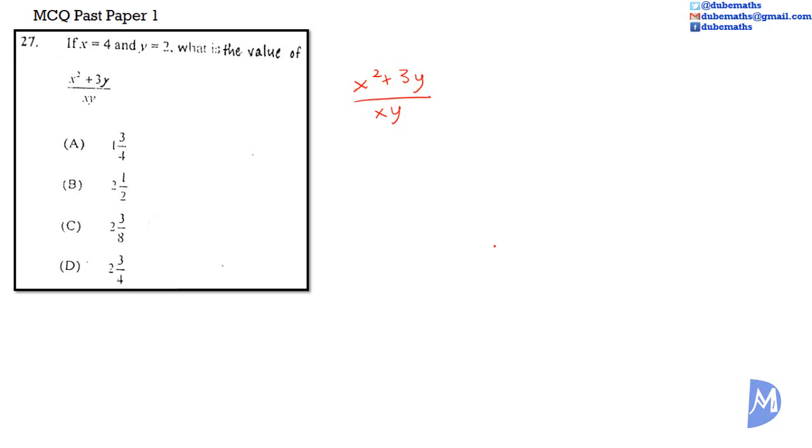We simply substitute X is equal to 4 and Y is equal to 2 in the provided expression. We get 4 squared plus 3 multiplied by 2, all over 4 multiplied by 2. We work out the numerator and the denominator, both using BODMAS, then we divide.